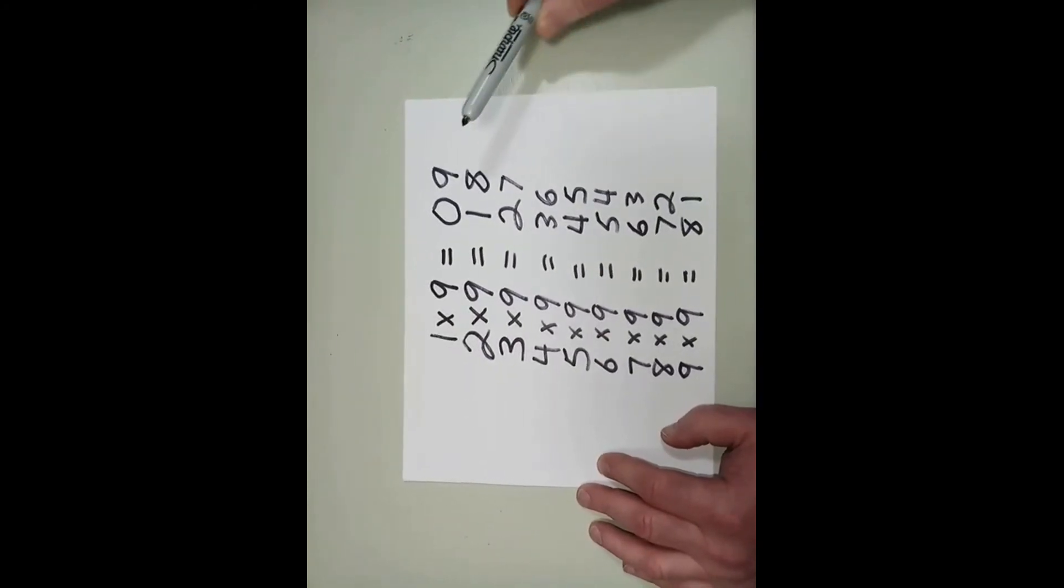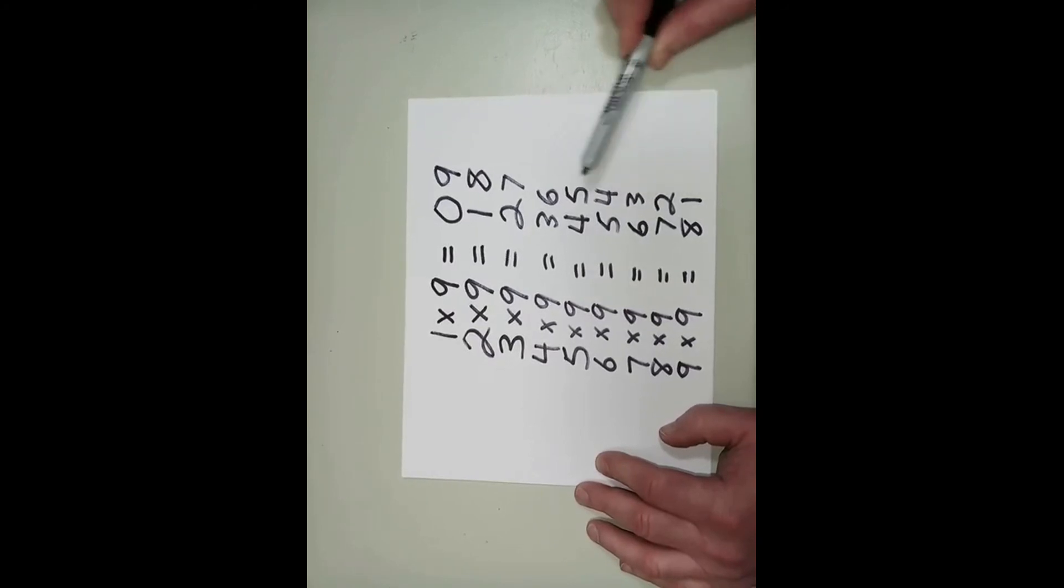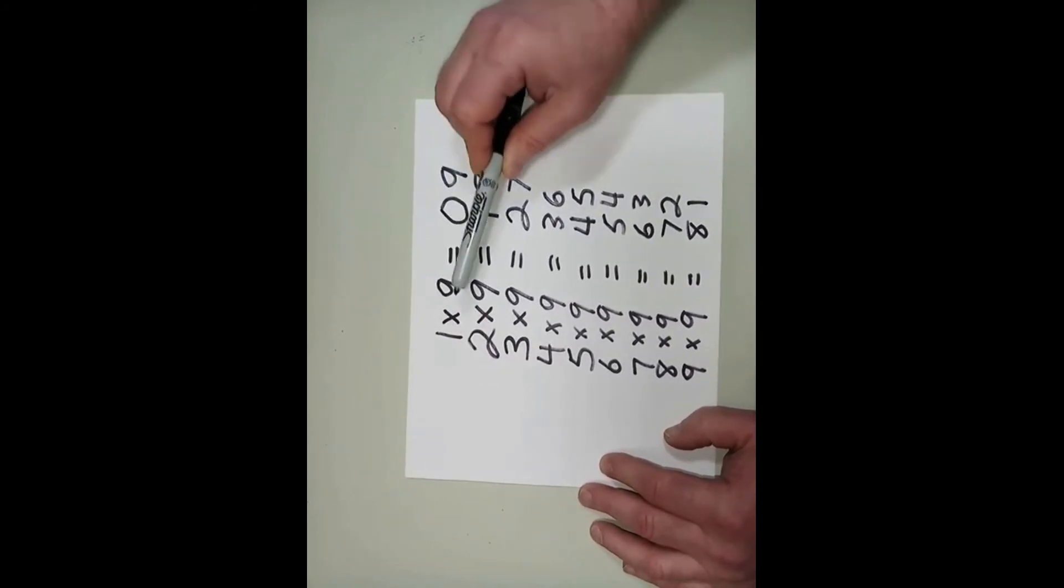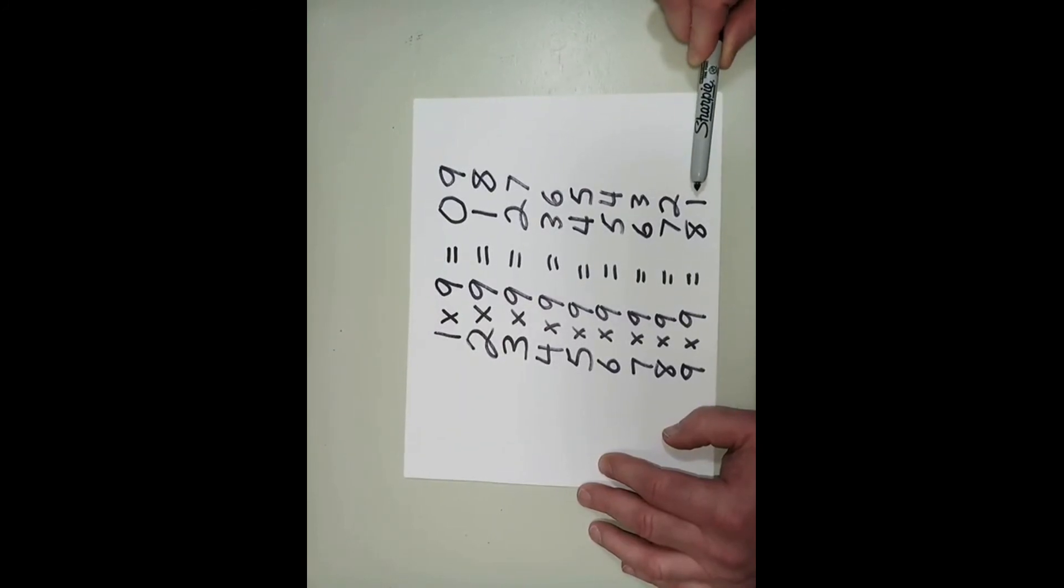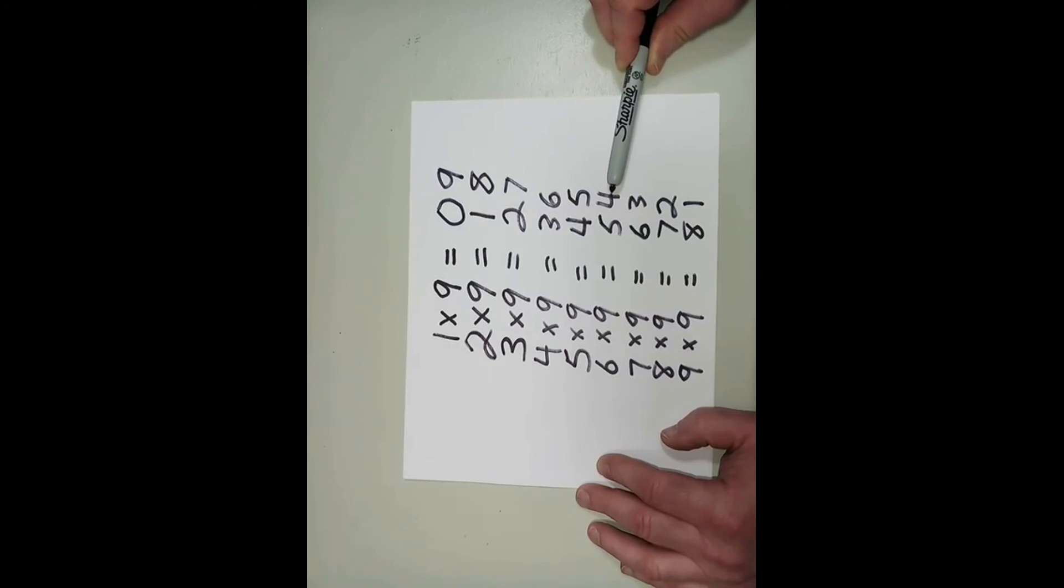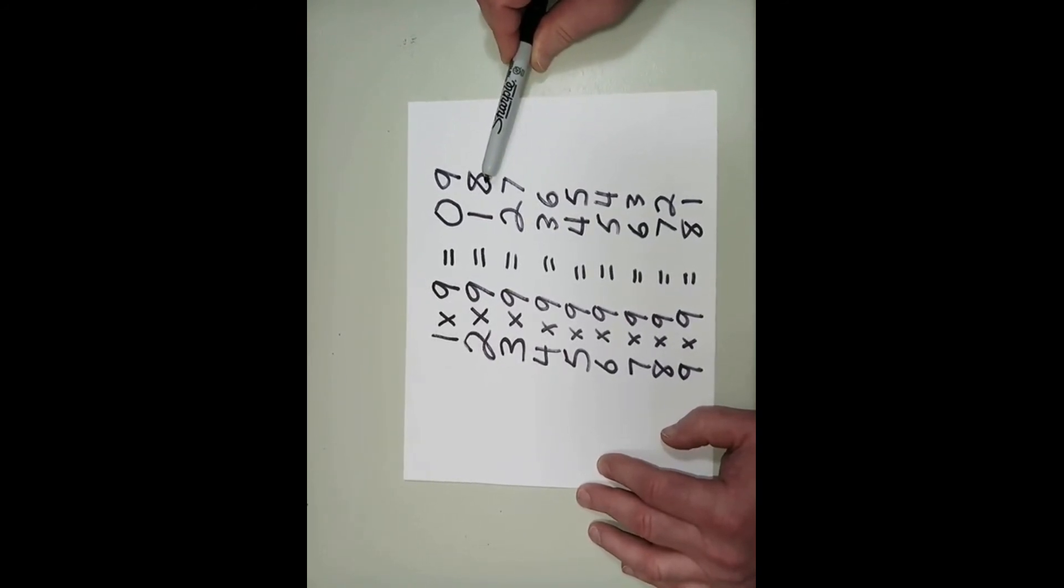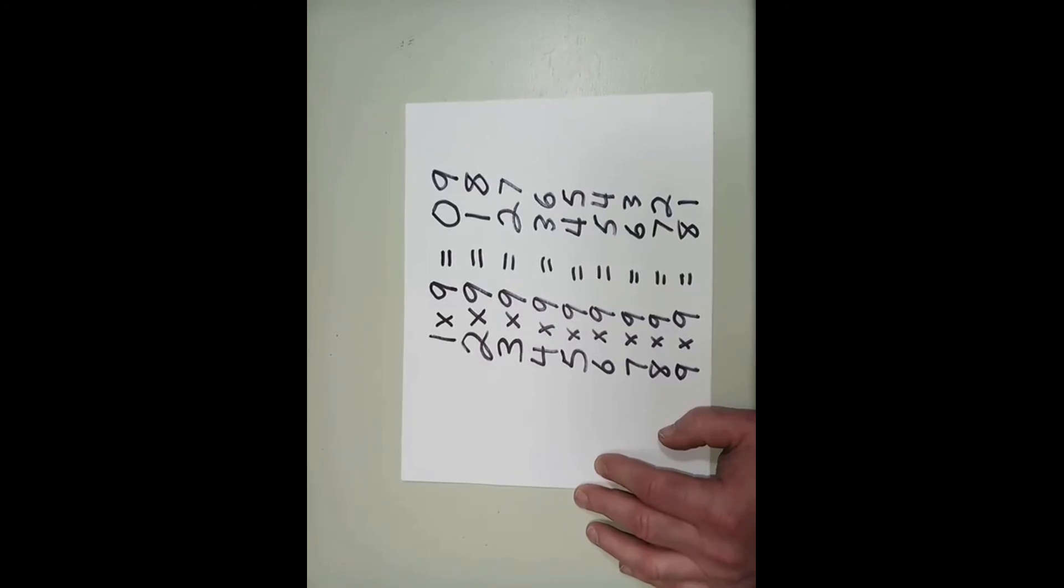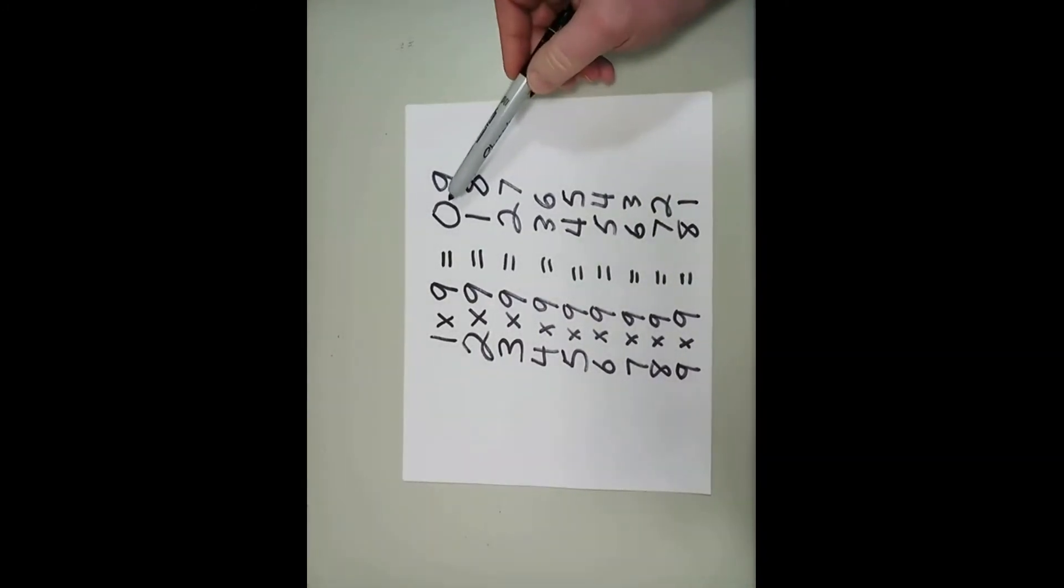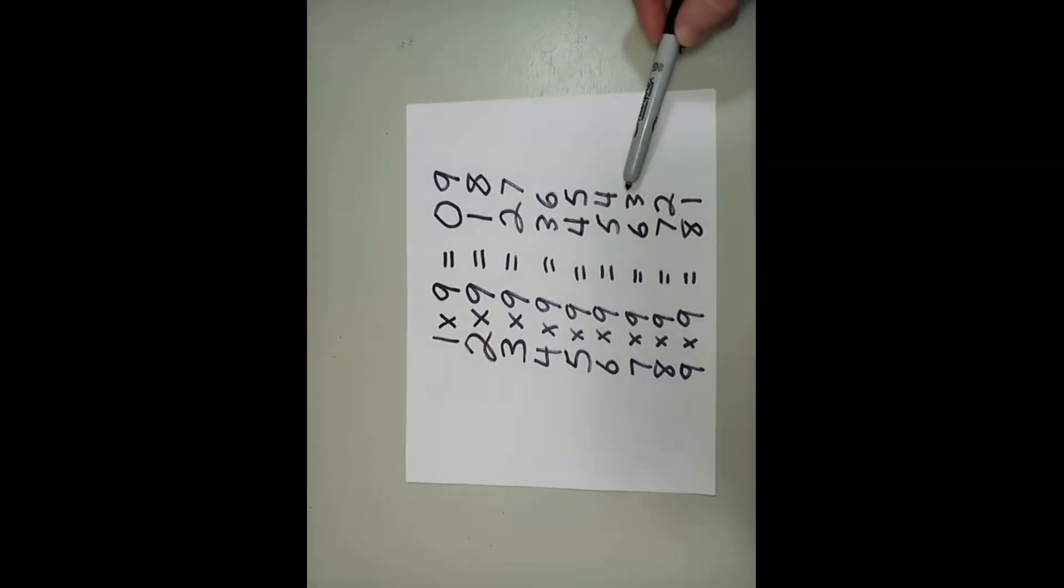And now if we look at the ones place let's go backwards. Starting from 9 times 9 and working our way back down to 1 times 9, in the ones place we have one, two, three, four, five, six, seven, eight, nine. So we can see in both directions the value changes by one in the tens place and in the ones place.